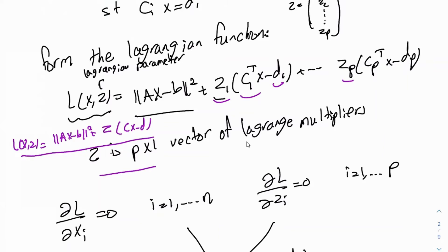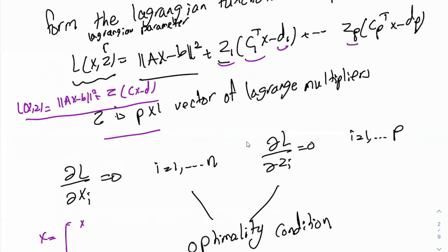The goal is to find the optimal point of the Lagrangian. We do this like calculus: take the derivative of the Lagrangian with respect to each xi and each zj, and set them to zero. x is an n-vector so i goes from 1 to n, and z has p elements so j goes from 1 to p. These sets of equations give us the optimality conditions.